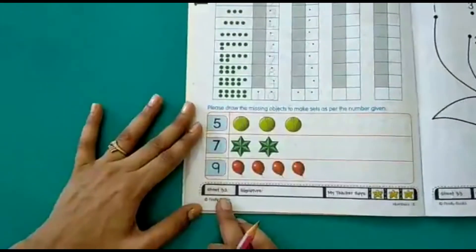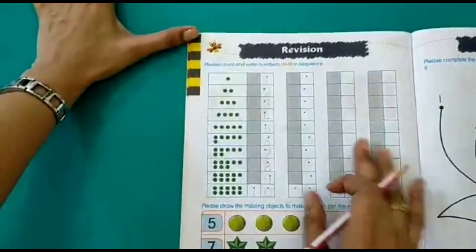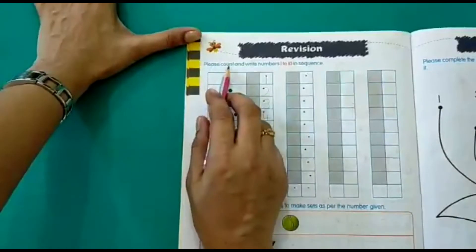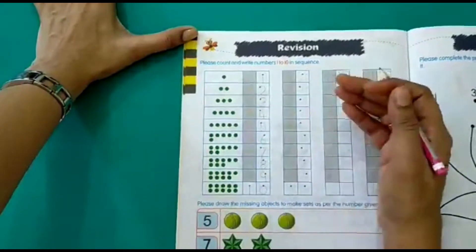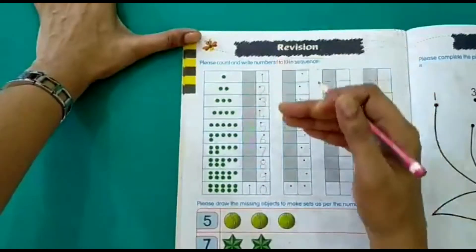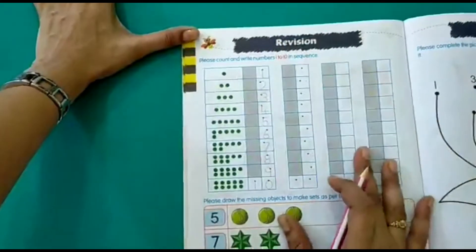So we are on page number 32. And here what we have to do is, we have to count and write numbers 1 to 10 in sequence. That means in an order you have to write 1, 2, 3.